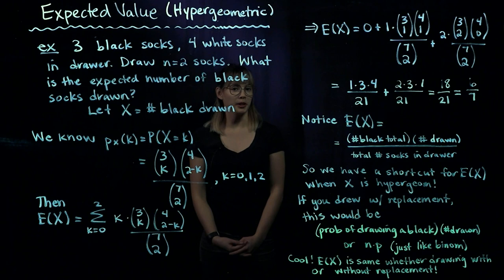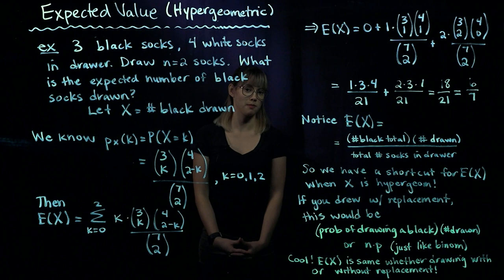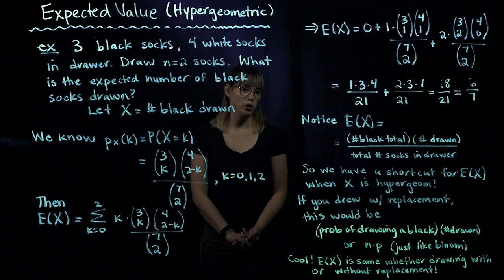We looked at the expected value for a binomial in earlier videos, and now we should revisit expected value for the hypergeometric distribution, which is kind of like a cousin to the binomial.